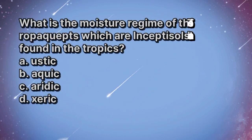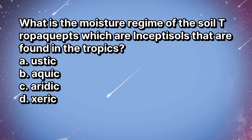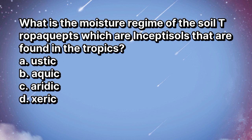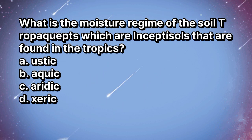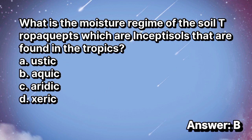What is the moisture regime of the soil Tropaquepts, which are Inceptisols that are found in the tropics? A. Ustic. B. Aquic. C. Aridic. D. Xeric. The answer is letter B.